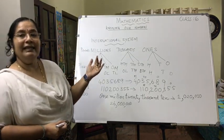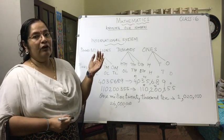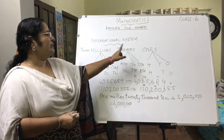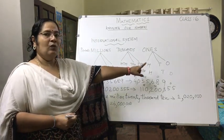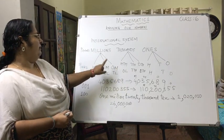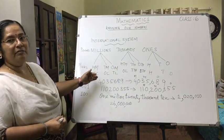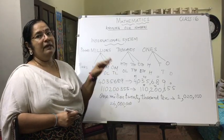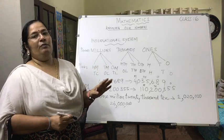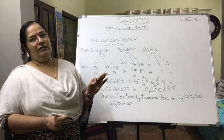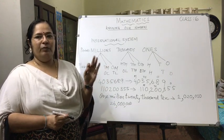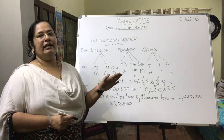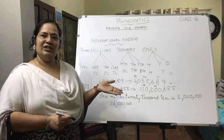Today we learned the international system of numeration: three periods, each divided into three places. The periods are ones, thousands, and millions. The places are ones, tens, hundreds, one thousand, ten thousand, hundred thousand, one million, ten million, and hundred million. We also saw the comparison with the Indian system and how to write number names and numerals. Notes will be given — please write them. Homework is also being given; please do it and upload it. Be prompt in completing each day's work. Thank you, children.